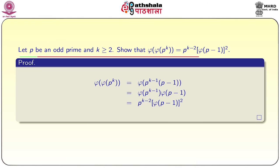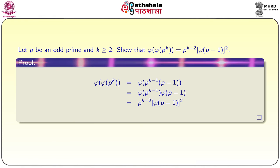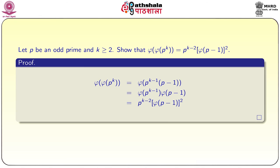Another property: if p is an odd prime and k ≥ 2, then φ(φ(p^k)) = p^(k−2) · (φ(p−1))². The proof: φ(p^k) = p^k − p^(k−1) = p^(k−1)(p−1). Since p−1 and p^(k−1) are relatively prime, φ(p^k) = φ(p^(k−1))·φ(p−1). Applying the formula for φ(p^(k−1)) again gives p^(k−2)·(φ(p−1))².